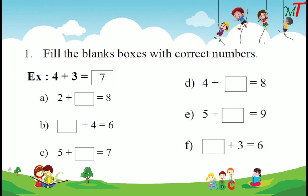Next exercise: 4 plus dash equals 8. First number is 4, so we add 4 dots. After 4 we add up to 8: 5, 6, 7, 8. So how many dots did we add after 4? Only 4 dots. So 4 plus 4 equals 8.